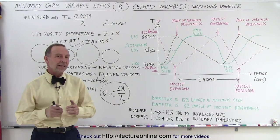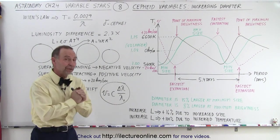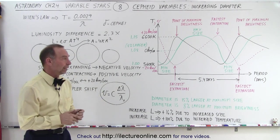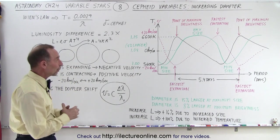Welcome to Electronline. Now the last aspect of cepheid variables we're going to look at is the change in the size of the star, the variable star, or the change in the diameter.